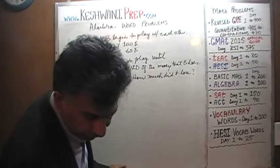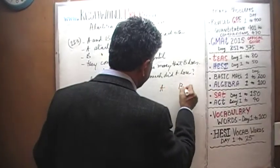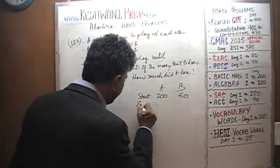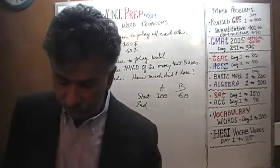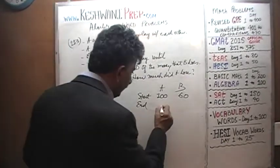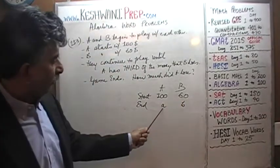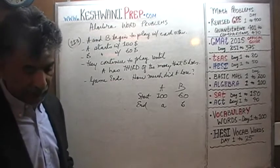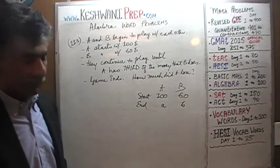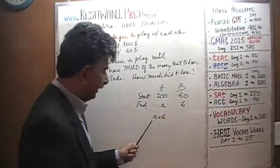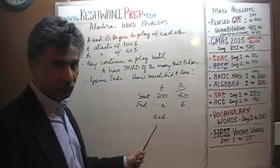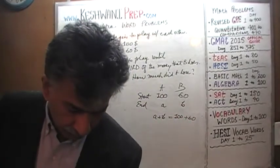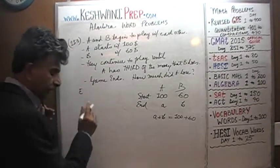Let's begin. We have two people A and B. We know they start out with $100 for A and $60 for B. The amounts where the game finishes are unknown to us — those are what we have to find. Let's call them small letter a and small letter b, where small a represents the amount that Mr. A finishes with and small b represents the amount that B finishes with. We know that a plus b must equal the total they started with — that's our first equation.